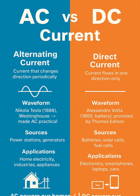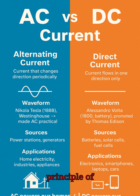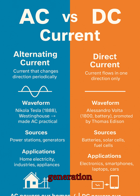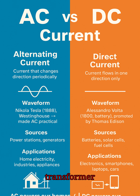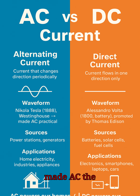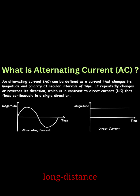AC was pioneered by Michael Faraday in the 1830s, who discovered the principle of electromagnetic induction, which made AC generation possible. Nikola Tesla in 1888 developed the practical AC motor and transformer system, and along with George Westinghouse, made AC the standard for long-distance power transmission.